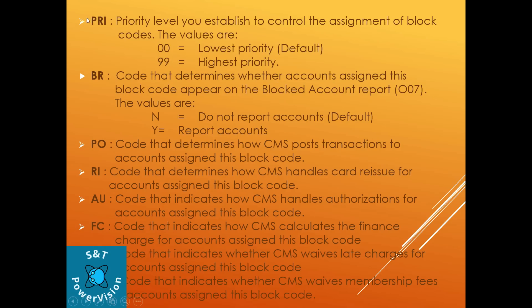Priority level is established to control the assignment of block codes. The values are 00 as the lowest priority by default and 99 as the highest priority. BR stands for the block code report — it determines whether an account assigned this block code would appear on the blocked account report 00007 or not. The values are N (do not report account) and Y (report account). Every value has some function and its corresponding value.